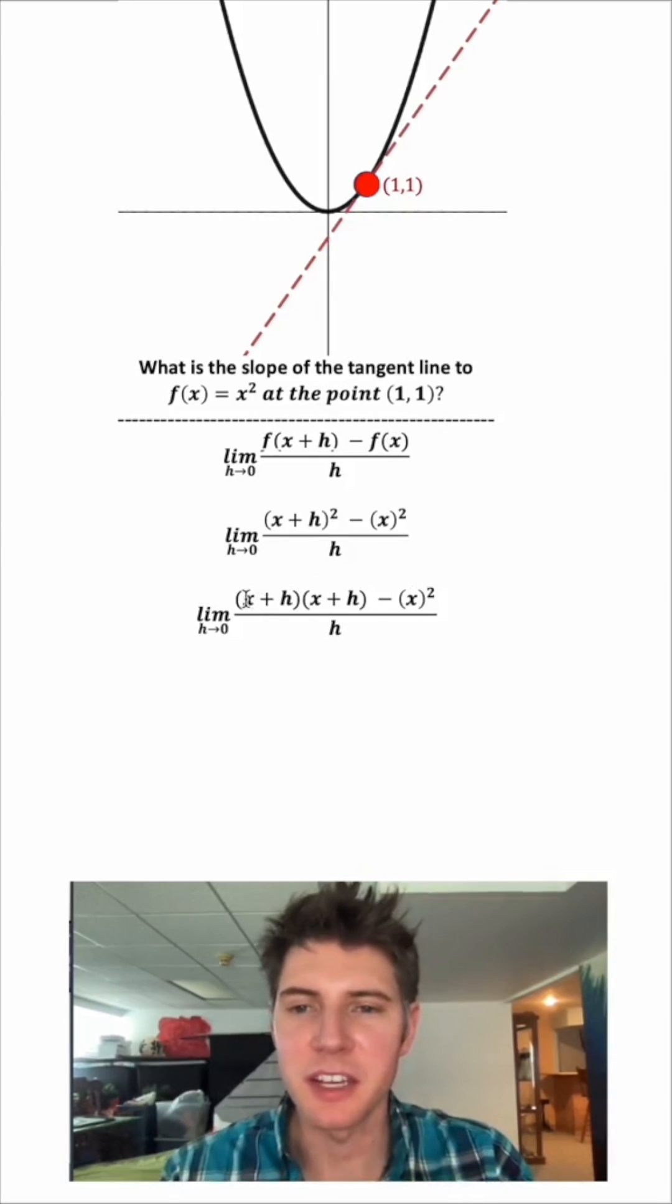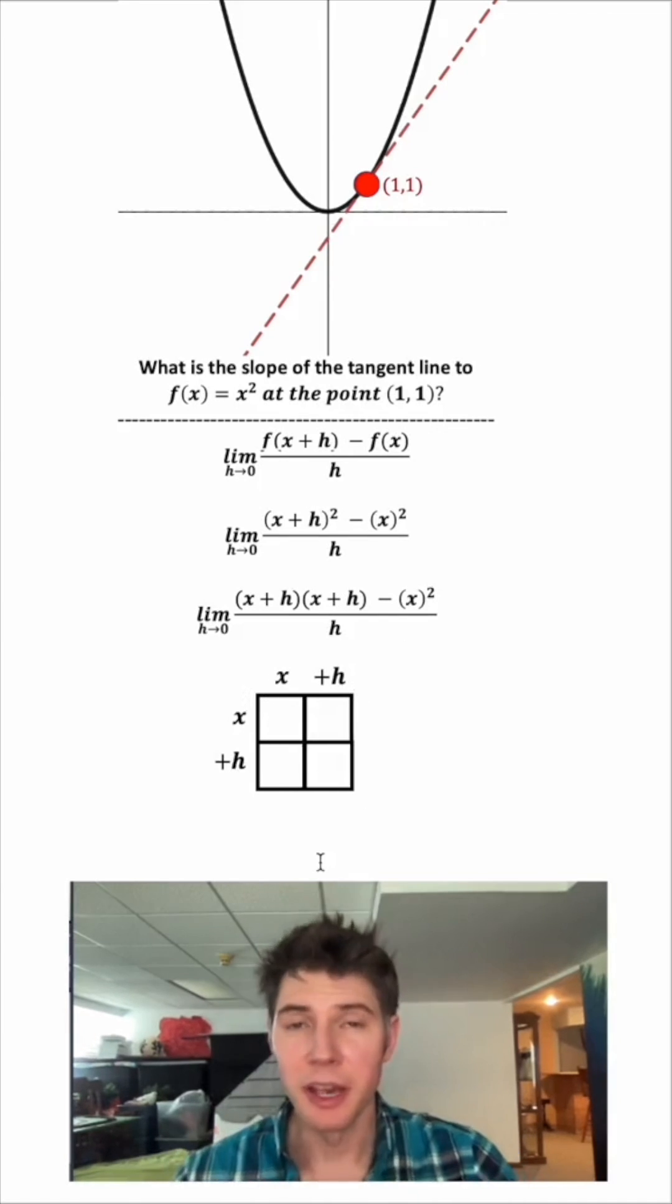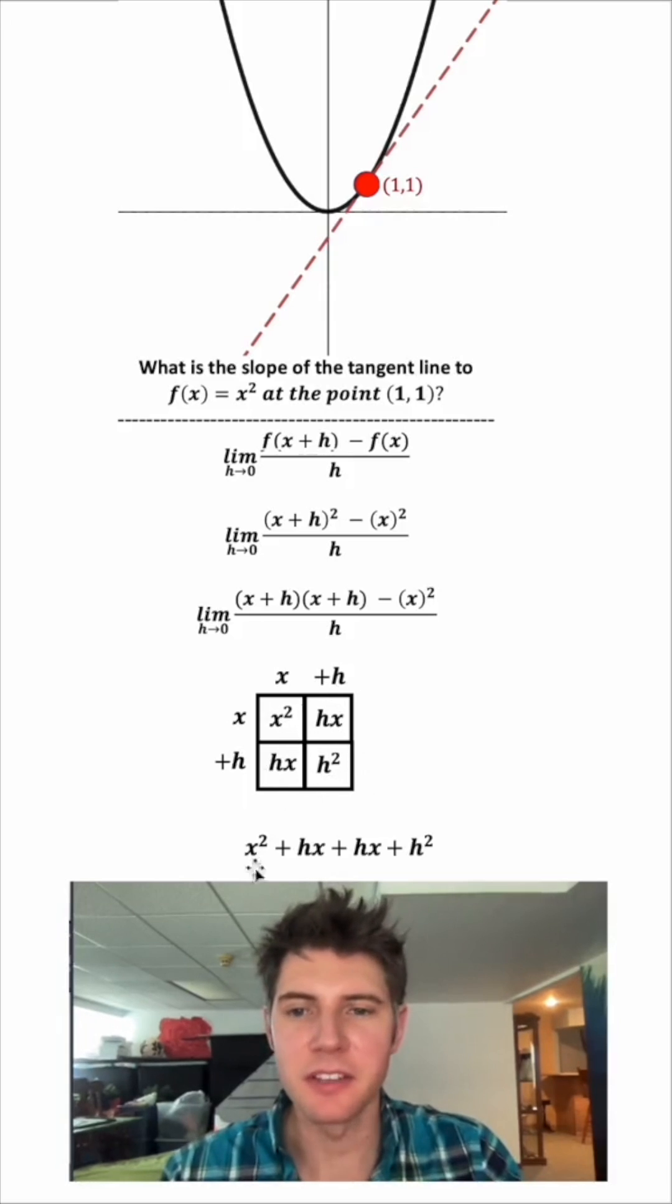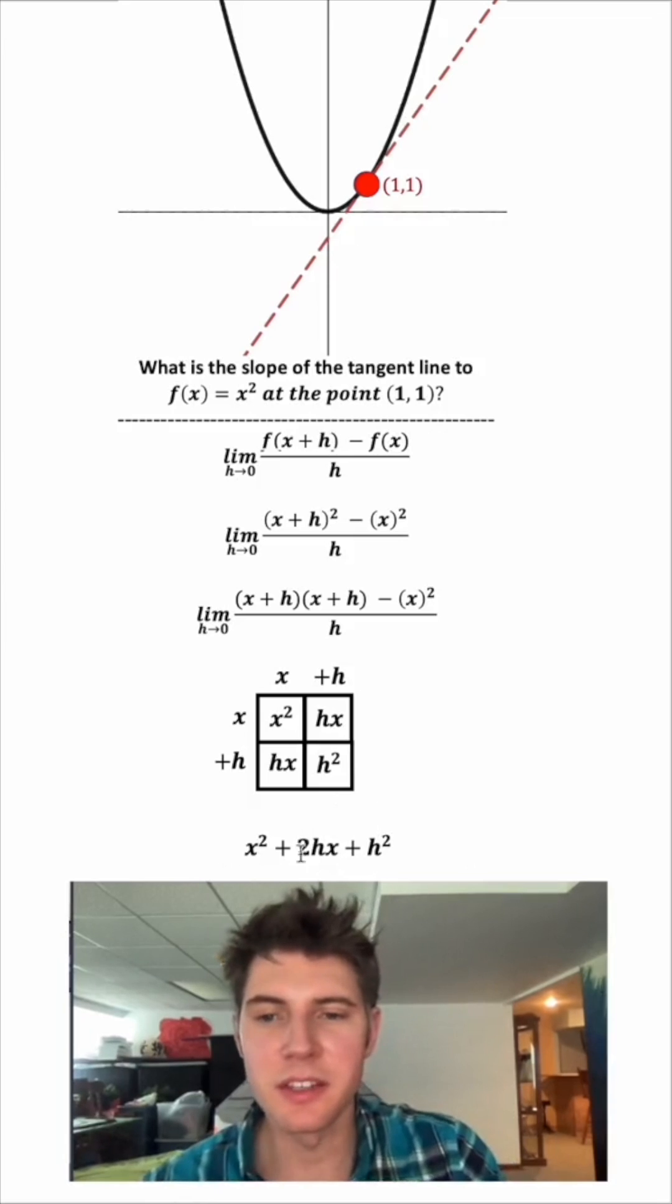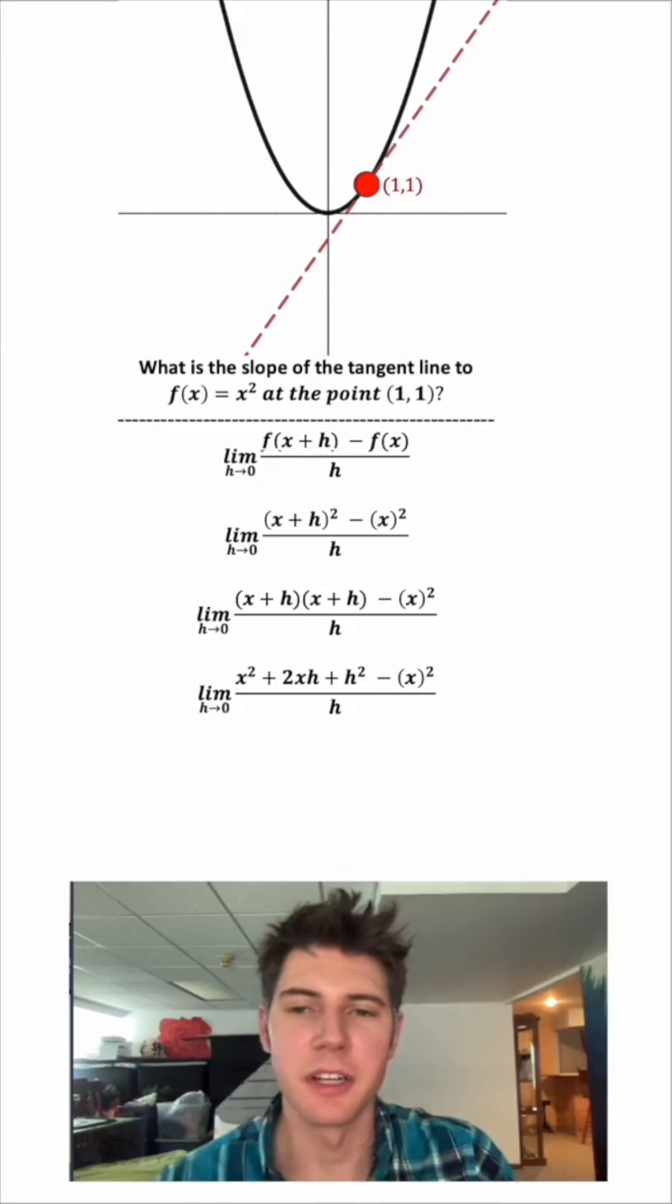Now to simplify this x plus h times x plus h, we can use one of these squares and do x plus h times x plus h. So x times x, that's x squared. H times x is hx. This x times x is hx. And h times h is h squared. So we can add up the inside stuff to get this here. And these two can be combined. This is the same thing as x plus h times x plus h. We'll get rid of this and put this up here and bring the rest of the formula down.